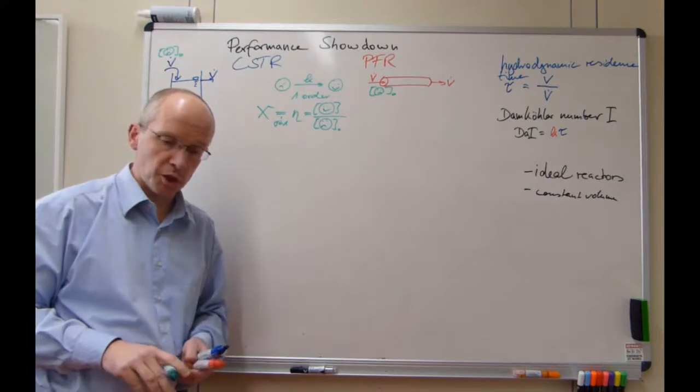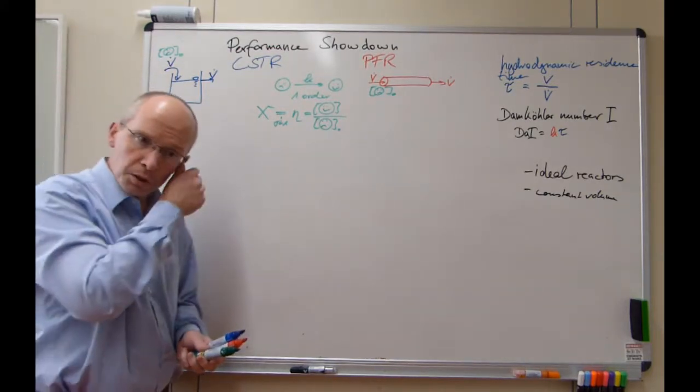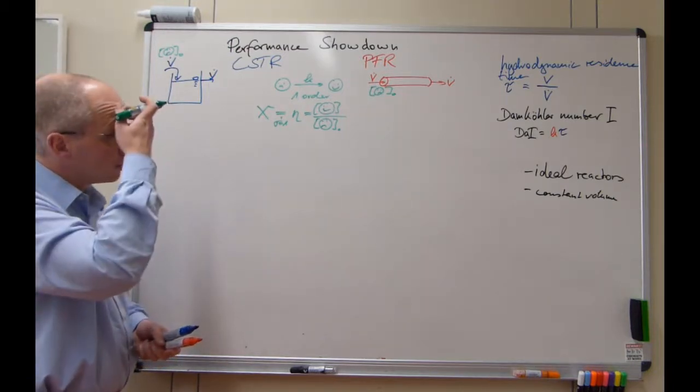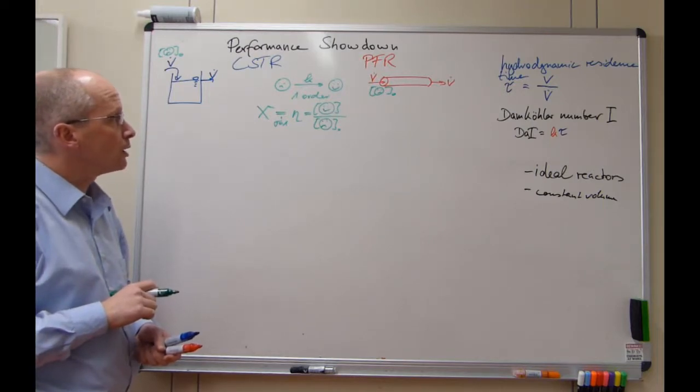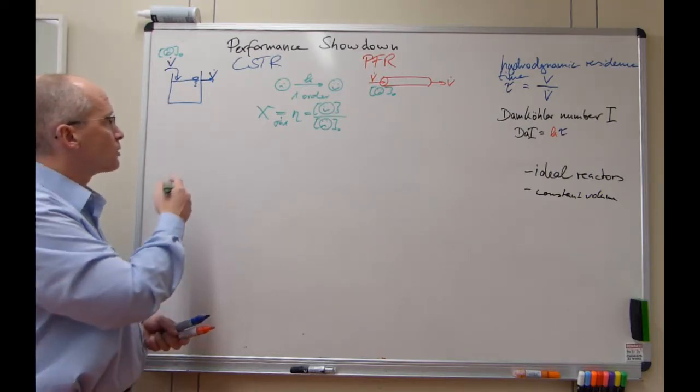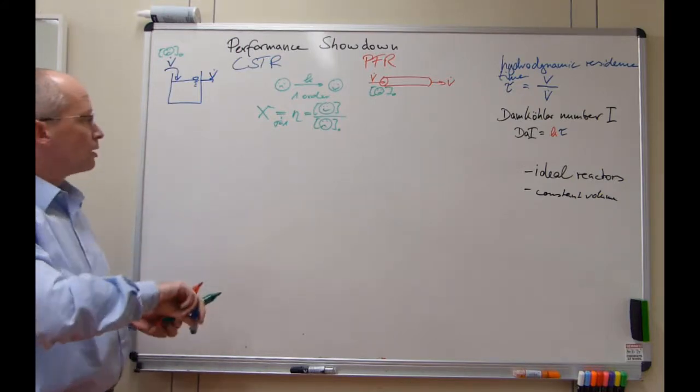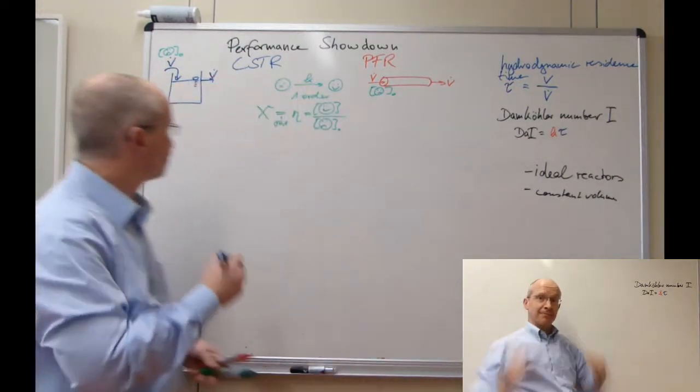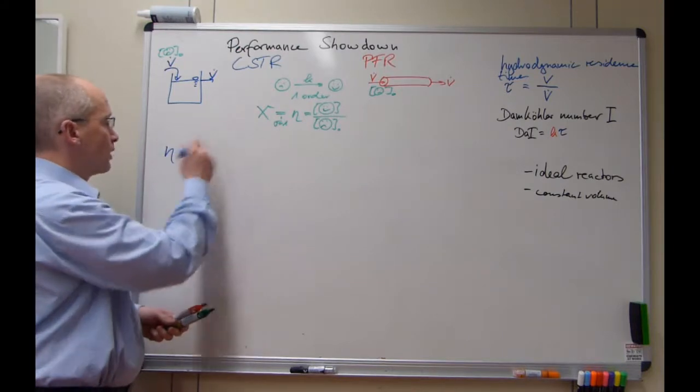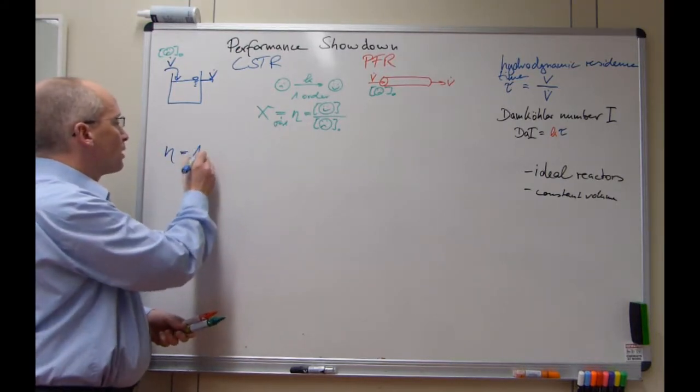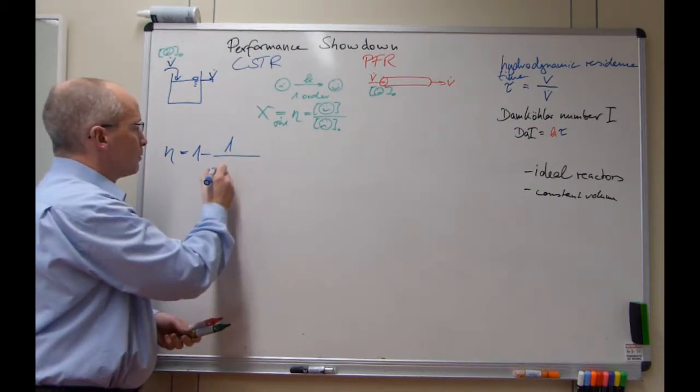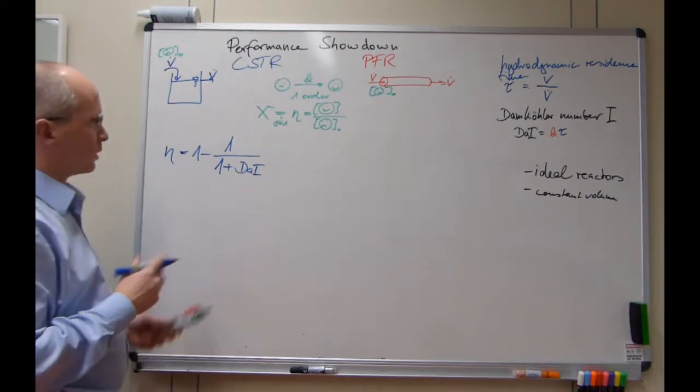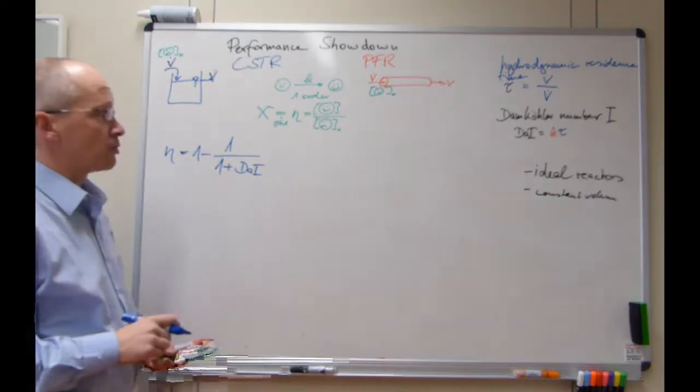The performance equations for that were rather interesting. We saw that if you look at yield and conversion being the same here, and we can see that in this blue one, this was dominated by our dimensionless Damköhler number. Yield in this reactor and conversion would be 1 minus 1 over (1 plus the Damköhler number), as given there. This is the performance equation for the continuous stirred tank reactor.